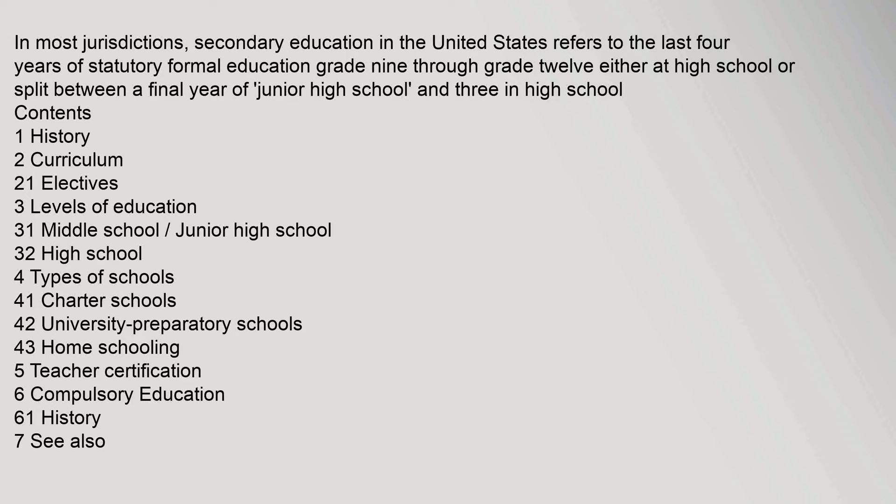In most jurisdictions, secondary education in the United States refers to the last four years of statutory formal education — grade 9 through grade 12 — either at high school or split between a final year of junior high school and three years in high school.